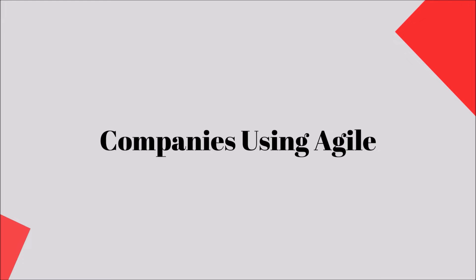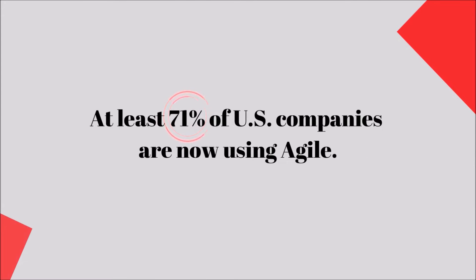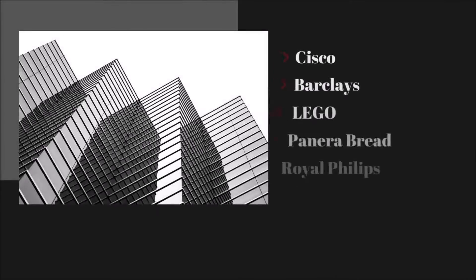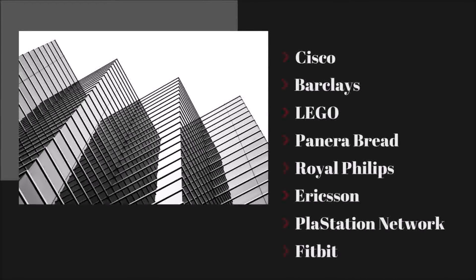Now let's go over private industry use of Agile Methodology. As cited by Zippia, the recruiting firm, at least 71% of US companies are now using Agile. TechBeacon noted the following companies as utilizing Agile methodologies: Cisco, Barclays, Lego, Panera Bread, Royal Philips, Ericsson, PlayStation Network, and Fitbit. These are just a handful of companies that fall into that 71 percentile.